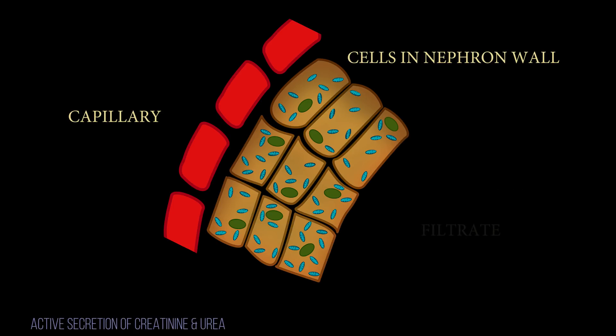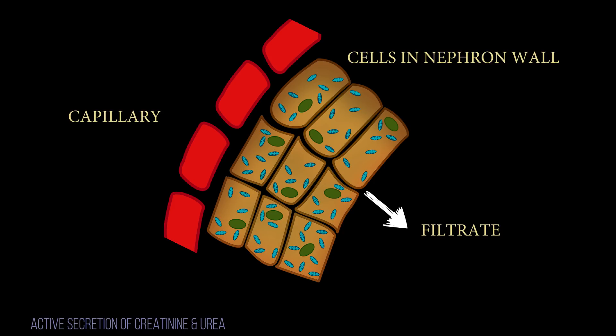These amino acids are either used by the tubule cells or passed on by diffusion to the blood capillaries. Finally, active secretion of unwanted substances such as creatinine and some urea occurs out of the blood capillaries in this region. These substances are transported from the tissue fluid bathing the tubules into the tubular filtrate and eventually removed in the urine.